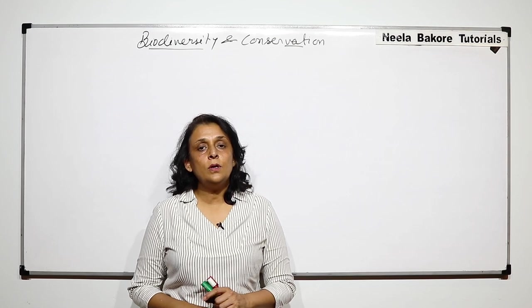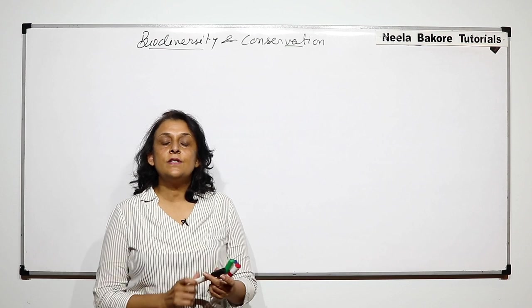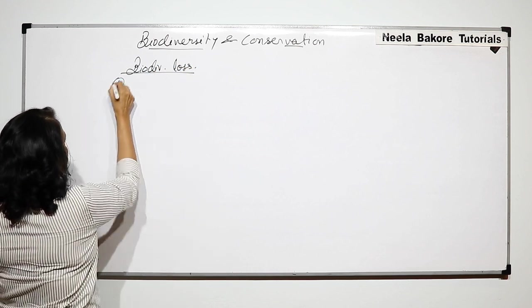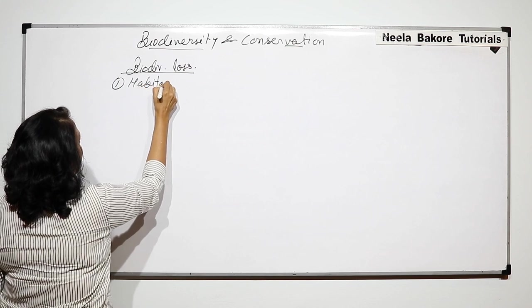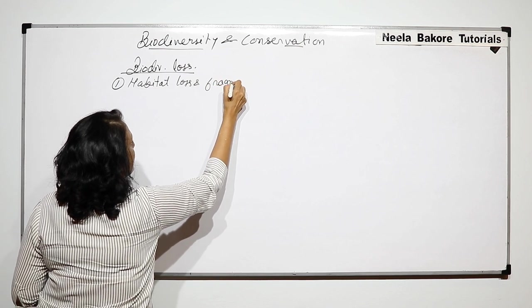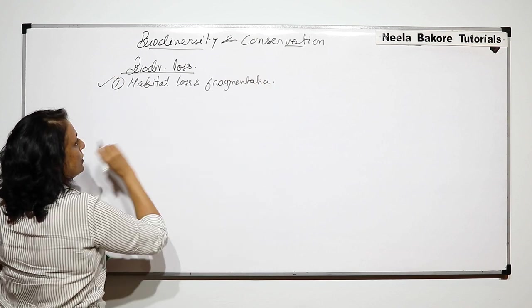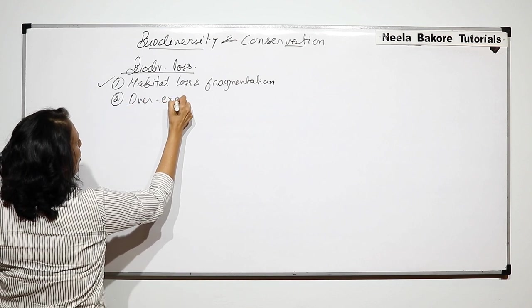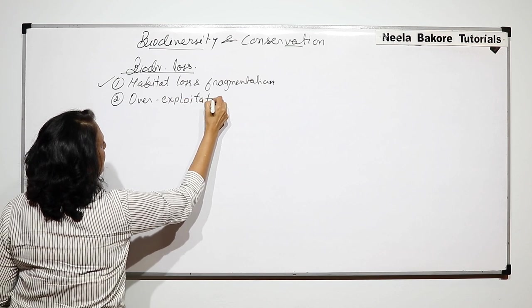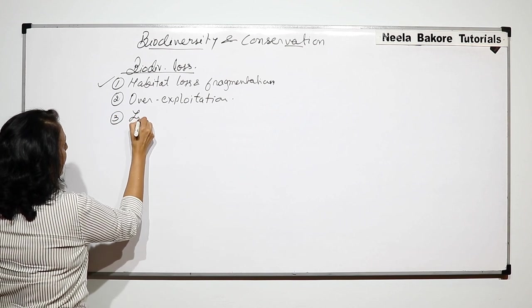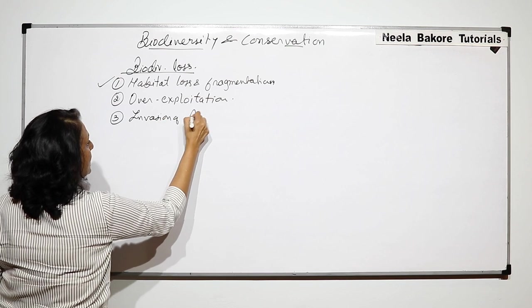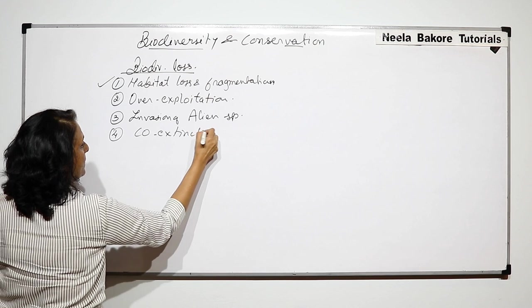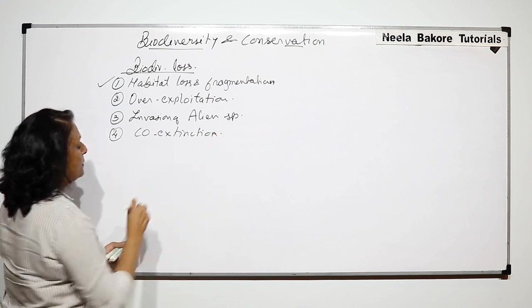In the previous part, we talked about one of the causes of biodiversity loss. We listed out four causes: habitat loss and fragmentation which we already talked about, over-exploitation, invasion of alien species, and co-extinction. We will be talking about the other three now.